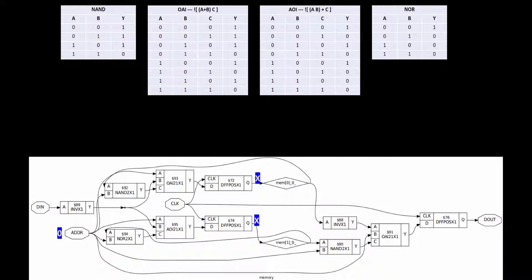You should check the truth tables by hand because it's very important to understand the functioning of the synthesized output netlist. In reality, there are tools available to do the entire functionality checking between the RTL and the synthesized netlist automatically. But this hand calculation gives a clear picture of what those verification tools do. We'll cover the automated tools in a separate verification course; for now, let's do the hand calculation since it's a small circuit.